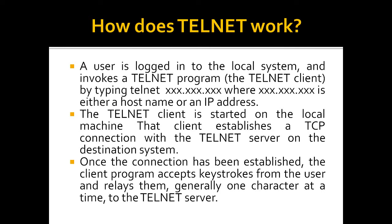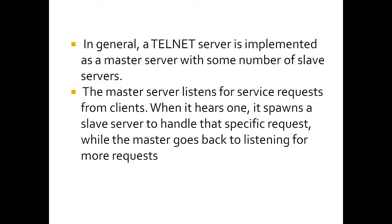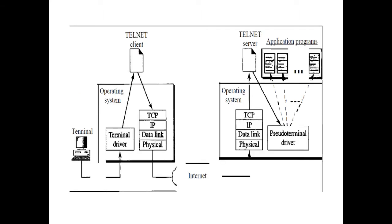How does Telnet work? When a user is logged into a local system and starts a Telnet program as a client by typing Telnet and an IP address, the client is started, which establishes a TCP connection with the Telnet server on the destination system. Once the connection is established, the program accepts data from the user and relays it one character at a time. In general, the Telnet server is a master server with slave servers. The master server listens for service requests from clients, then slave servers handle the specific request, and the master goes back to listen for more requests. Here we can see the working of Telnet client and server — a connection is established between two networks where the Telnet client requests a service and the Telnet server works on it.